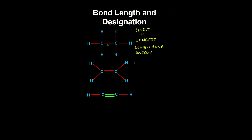This double bond, in the ethane molecule, consists of one sigma and one pi bond. Pi bonds are where the electrons overlap side-on, which we'll see later. It has a length between a single and triple bond, and its bond energy is between that of a single and triple bond.